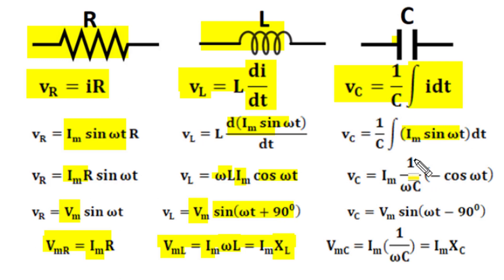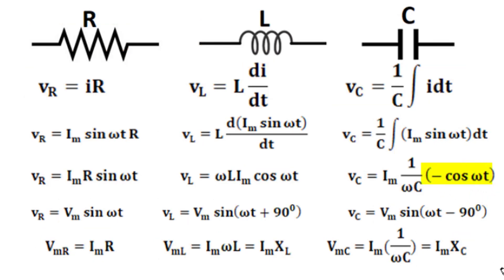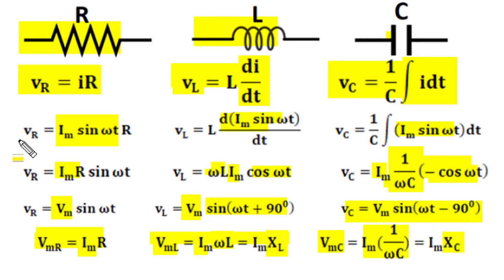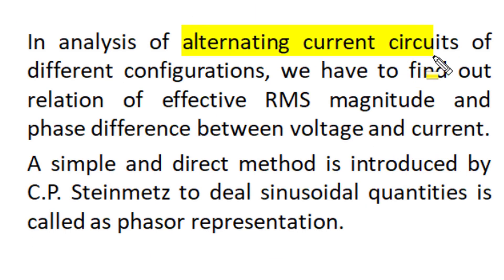In a capacitor, when I_m sin(ωt) is integrated, I_m comes out and the integration of sin(ωt) is −cos(ωt)/ω. We can call 1/(ωC) as capacitive reactance X_C, and the product of I_m and X_C becomes the peak magnitude of voltage. Writing −cos(ωt) as sin(ωt − 90°) clearly indicates that in a capacitor current leads voltage by 90°. So: in resistance, current and voltage are in phase; in inductor and capacitor there is a 90° phase difference, with current leading in a capacitor and lagging in an inductor.